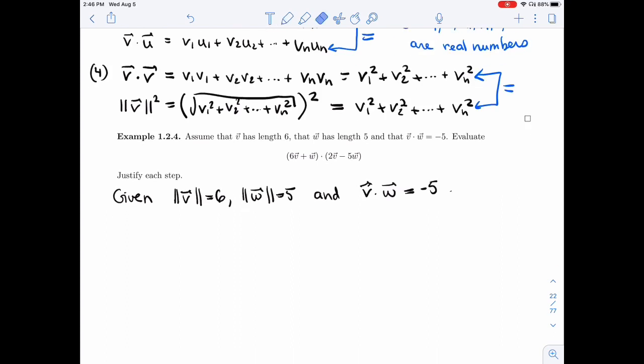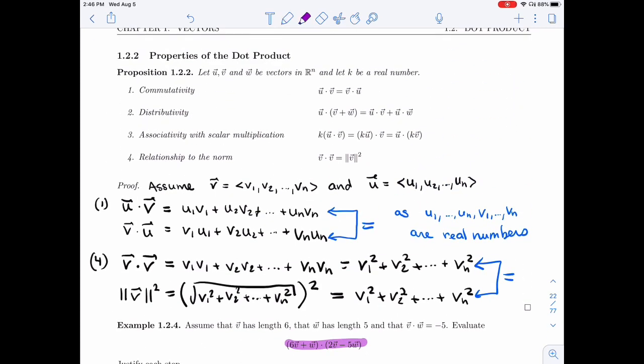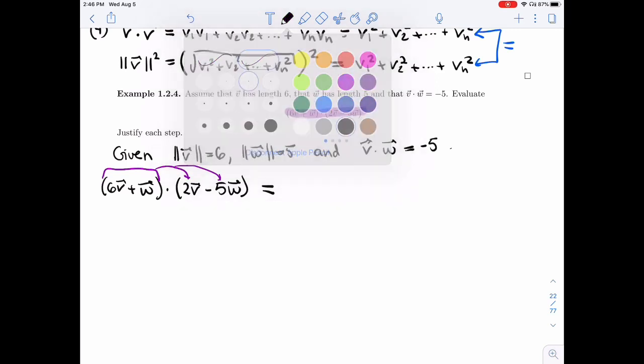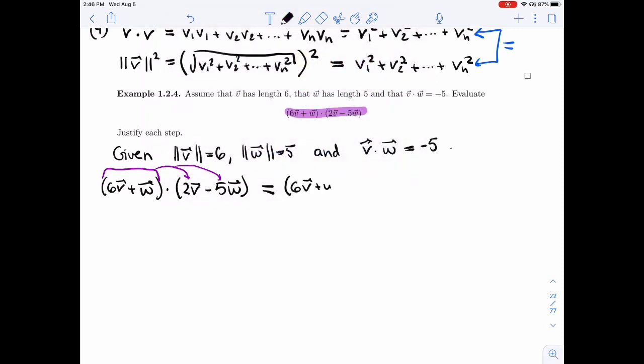So that's what we have. Now we want to expand this so that we can use what we're given. So I'm going to write 6V plus W dot 2V minus 5W here, and I'm going to expand. So I'll use the distributivity property. I'm going to use it slowly, taking this as one vector and distributing it on both sides. So I'll get 6V plus W dot 2V, and I'll get 6V plus W dot minus 5W.